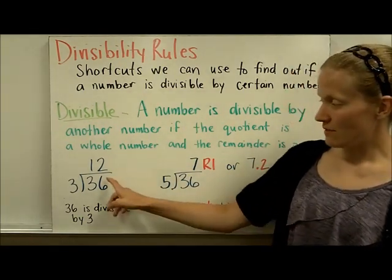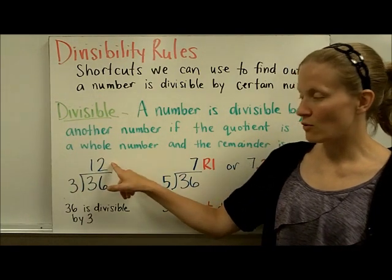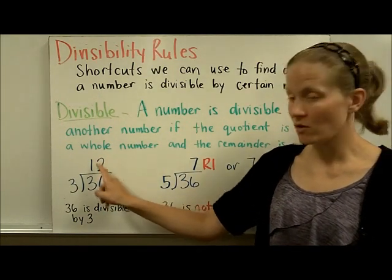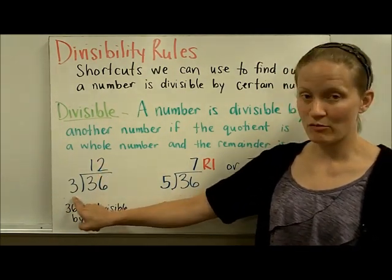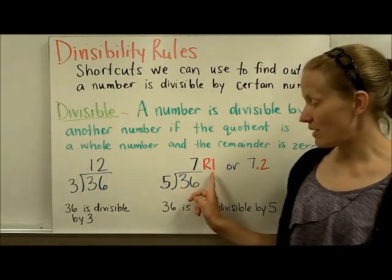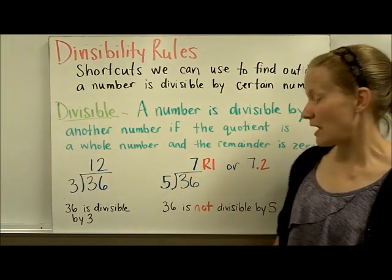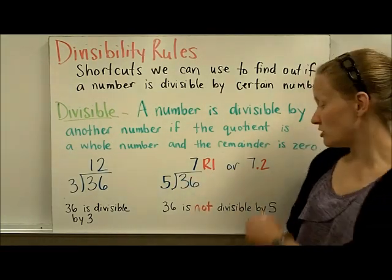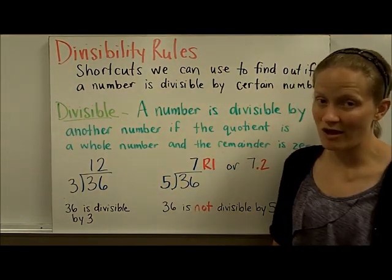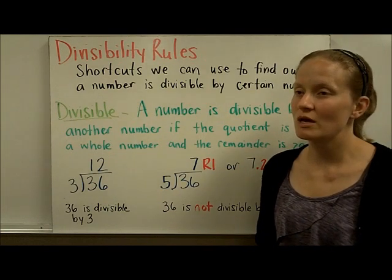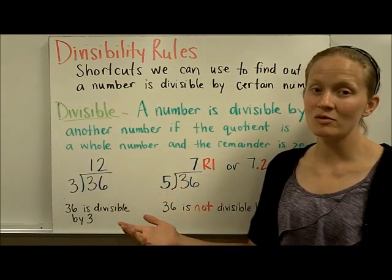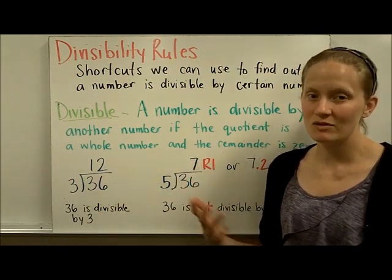Let's see two examples. 36 divided by 3 gives a quotient of 12, which is a whole number with no remainder. This means 36 is divisible by 3. But if we divide 36 by 5, we get a remainder — or on a calculator, a decimal — which is not a whole number. That tells us 36 is not divisible by 5. So we're going to find shortcuts so we can quickly know whether numbers are divisible by other numbers without having to do every single division problem.